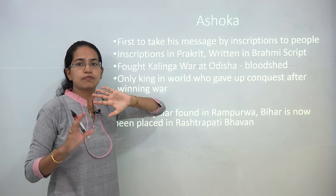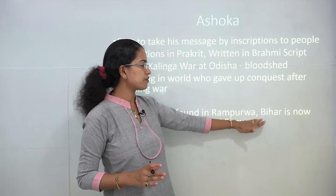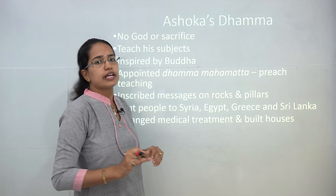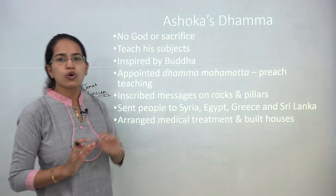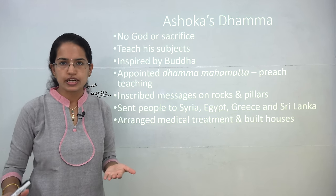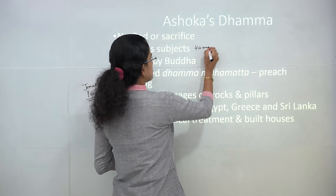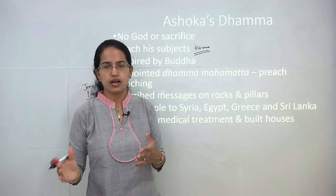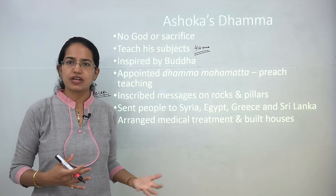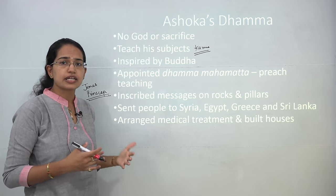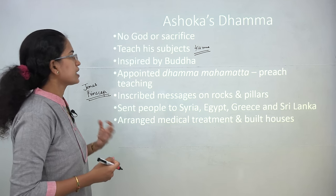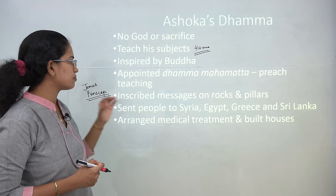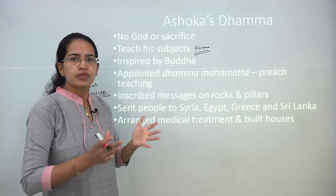Various Ashokan pillars have been found from the Mauryan period. One found at Rampurva in Bihar is now established at Rashtrapati Bhavan in India. Ashoka's Dhamma emphasized that there is no god or sacrifice — everything is human deed and karma. He appointed Dhamma Mahamatras, officials who would preach the teachings of Buddha and spread Buddhism. He observed much distress around him — family quarrels, animal sacrifices, and mistreatment of slaves — all of which changed his heart; he was deeply inspired by Buddha.